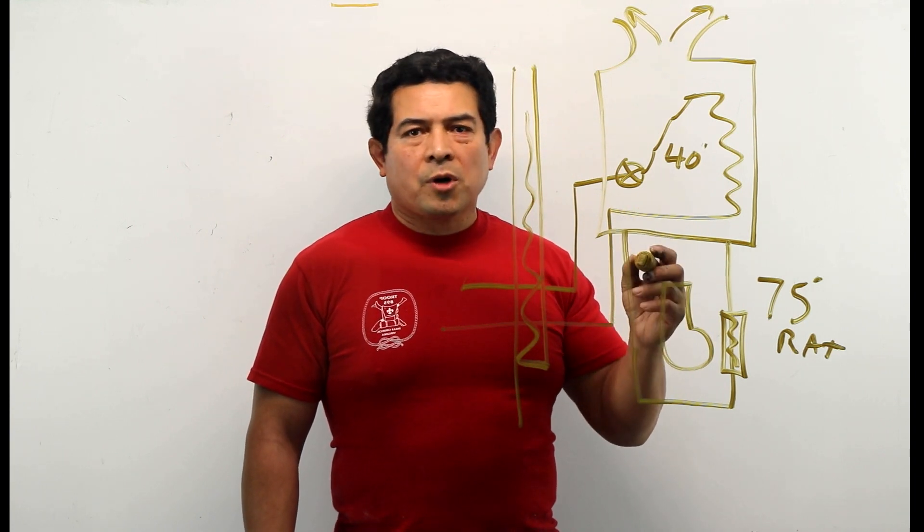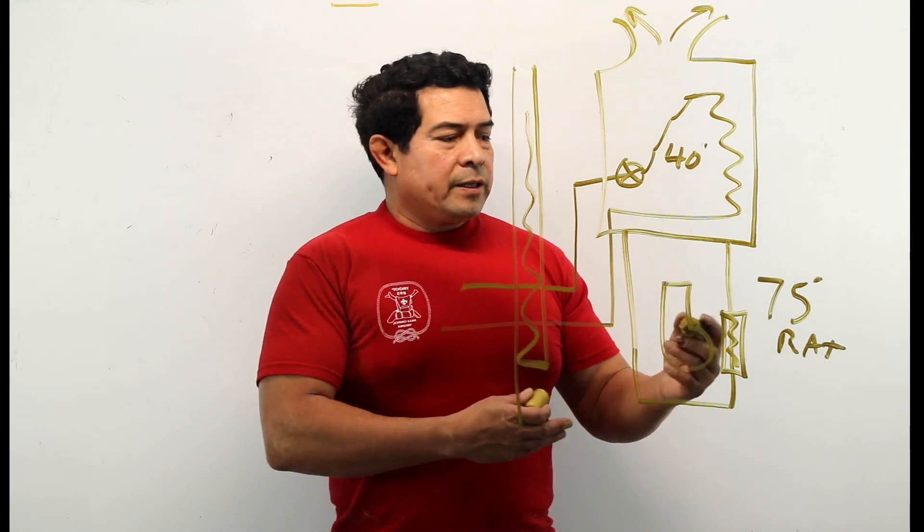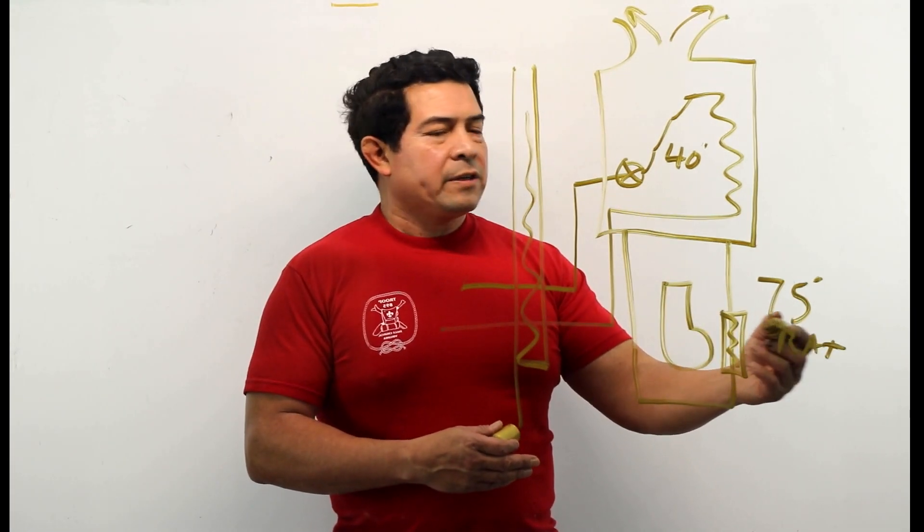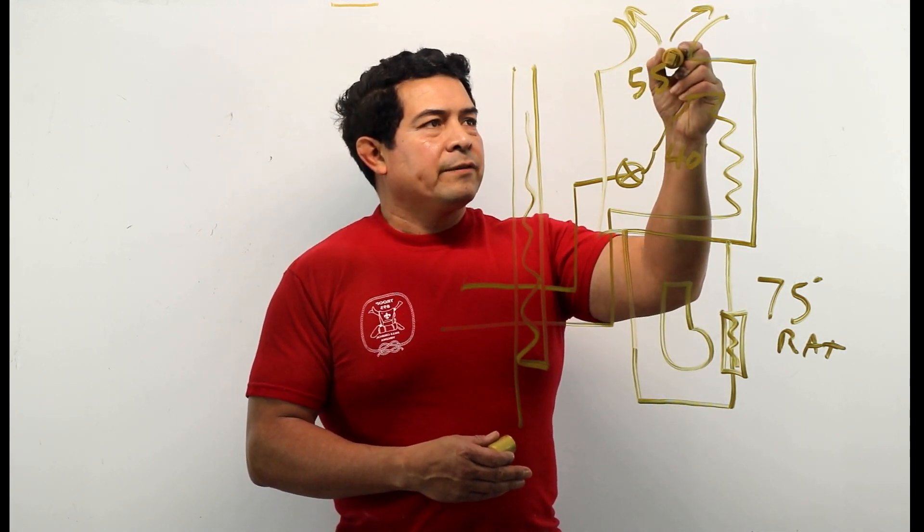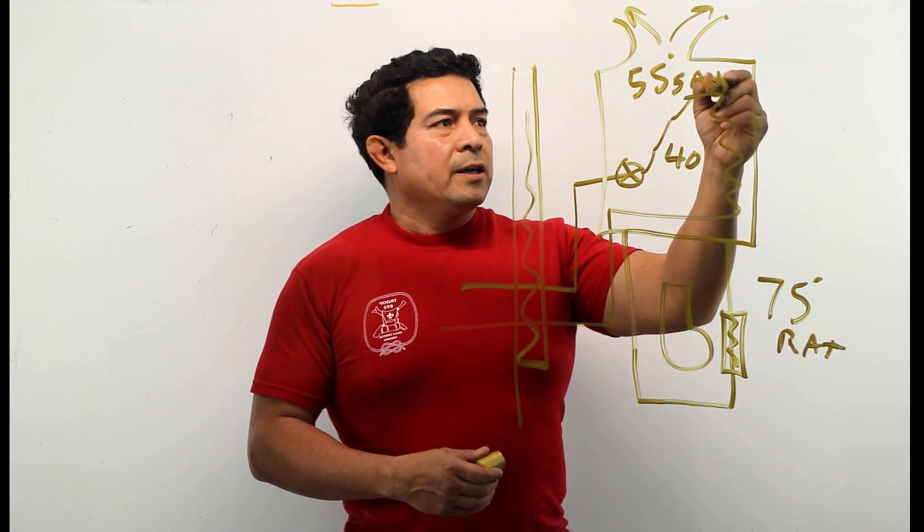But if the system is charged properly, if the system has been running for a while and it's working like it's supposed to, then what you're going to have is 75 degree air coming in and approximately 55 degree air going out. That's going to be your supply air temperature.